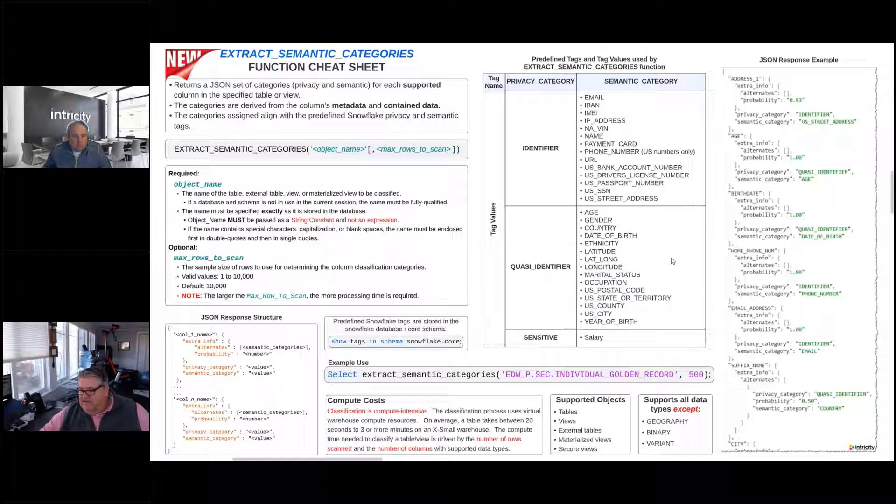So that we can use these in conjunction with those types of things. And then right now we've got sensitive, which the only thing we've got in there is salary. So you can expect that there are going to be more values for the semantic_category tag as we go ahead and move forward and Snowflake brings more and more into this.